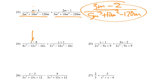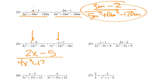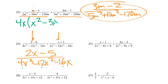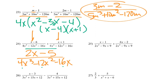For number 24, same denominator. x and x give 2x, negative 6 and 1 give minus 5, over 4x cubed minus 12x squared minus 16x. We'd call that good. If I pulled out a 4 and an x, I'd have 4x times x squared minus 3x minus 4, which factors to x minus 4 times x plus 1 — that doesn't match up with 2x minus 5, so we couldn't simplify further. We'd just leave it how it is.